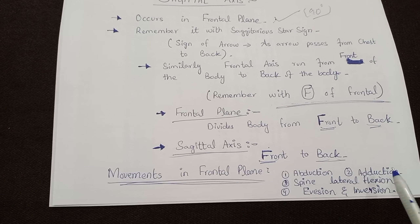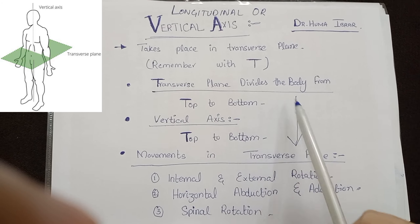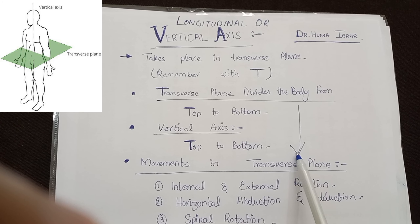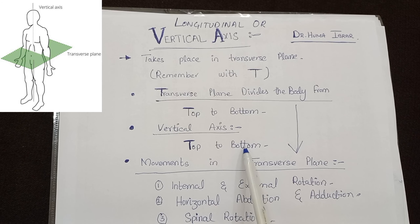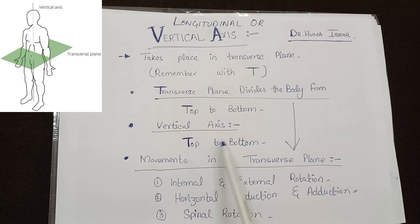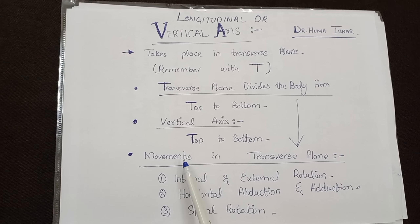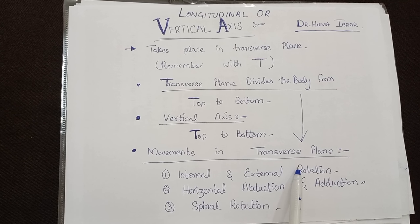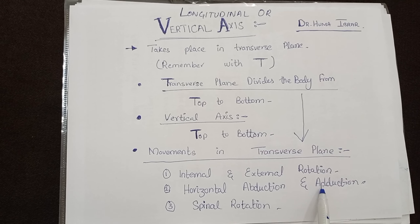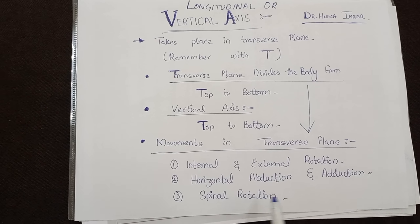Now let's talk about the longitudinal or vertical axis. This takes place in the transverse plane — remember with T. The transverse plane divides the body from top to bottom, and the vertical axis also crosses the body from top to bottom. The movements that take place in the transverse plane are: internal and external rotation, horizontal abduction and adduction, plus spinal rotations.